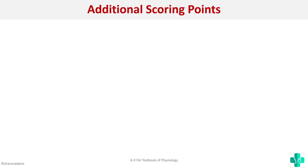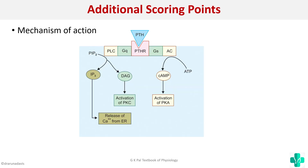For additional scoring points, you can mention the mechanism of action of parathormone. It acts via a G-protein coupled receptor with two mechanisms: it can act on adenylyl cyclase to produce increased cAMP and thereby activate protein kinases; it can also activate the IP3/DAG mechanism, causing activation of PKC and increased calcium release from the endoplasmic reticulum. So parathormone has two mechanisms — one by increasing cAMP and the other through IP3 and DAG.